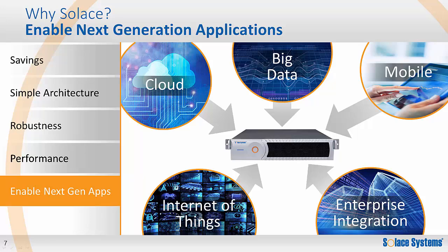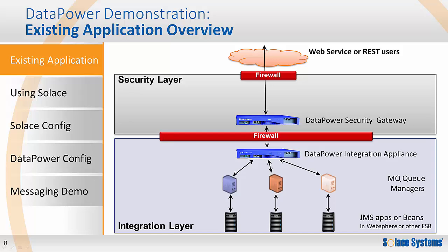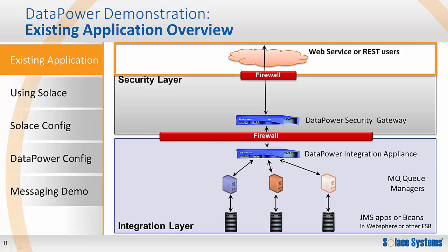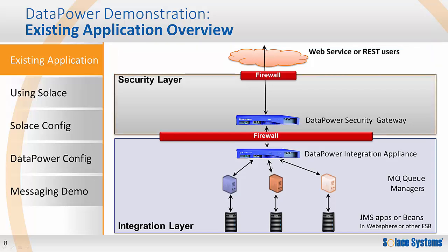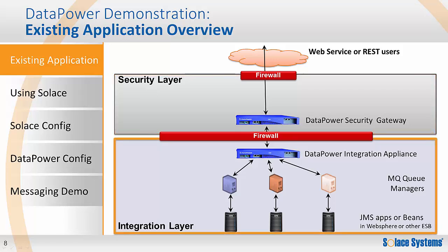So now let's switch to the Datapower integration use case. At a high level, the scenario shown here is a use case like a financial firm's customer portal, an e-commerce website, or a REST service gateway for mobile applications. Users make HTTP requests for information, which are sent to the Datapower security gateway. The gateway authenticates and authorizes clients, then forwards acceptable requests to the integration layer, which inspects, transforms, and routes the message to the correct backend application. It also aggregates responses and transforms them into a format expected by the client, then forwards them to the security layer to return to the original client.